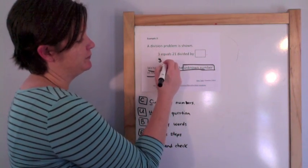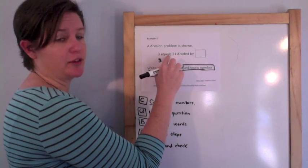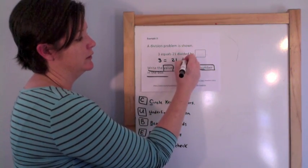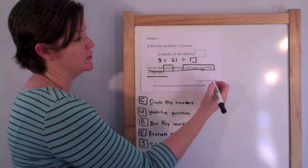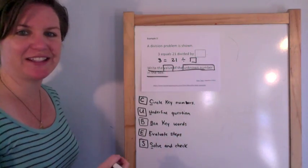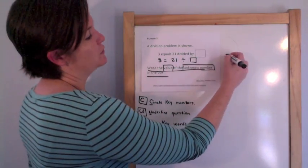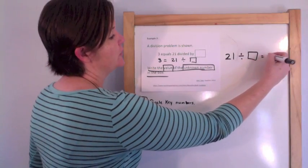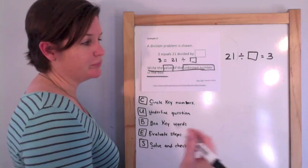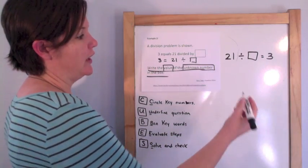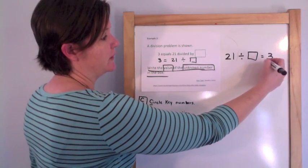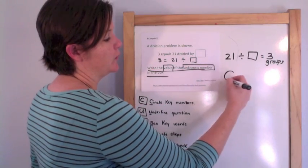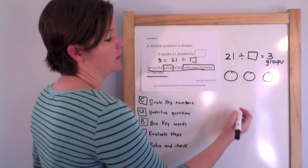So: 3 equals 21 divided by what? You might not have seen it like this before. It's really like saying 21 divided by what equals 3. If you're not sure right away, you could make this your groups — 21 things going into 3 groups.